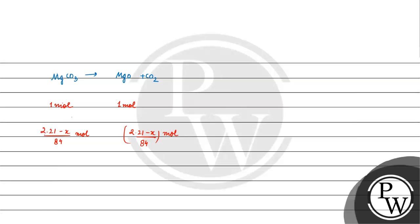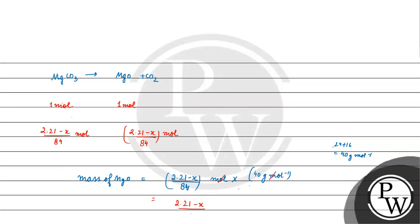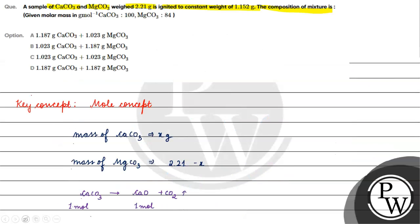अब mass of magnesium oxide क्या होगा? Number of moles = (2.21 - x)/84, और molar mass of MgO = 24 + 16 = 40 gram per mole। So mass of MgO = (2.21 - x)/84 × 40 grams। Mass of MgO और mass of CaO दोनों हमें पता हैं।